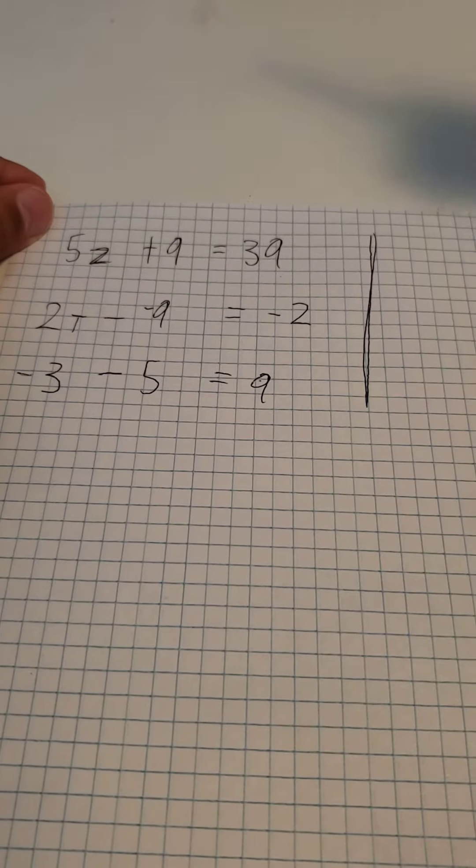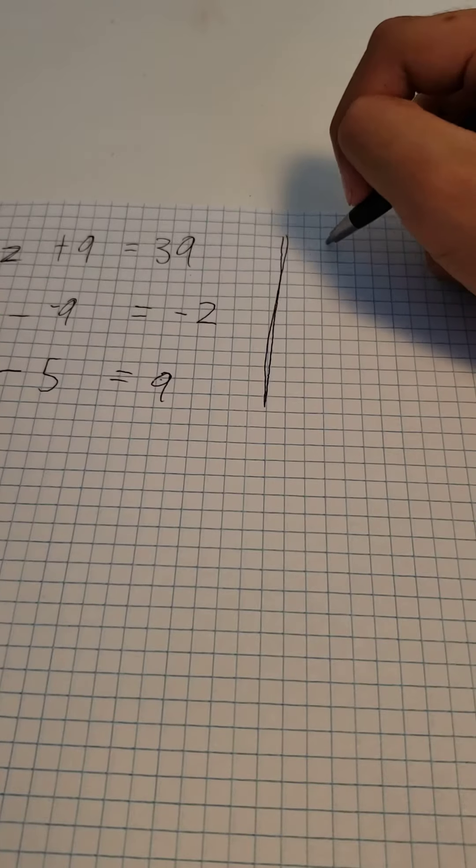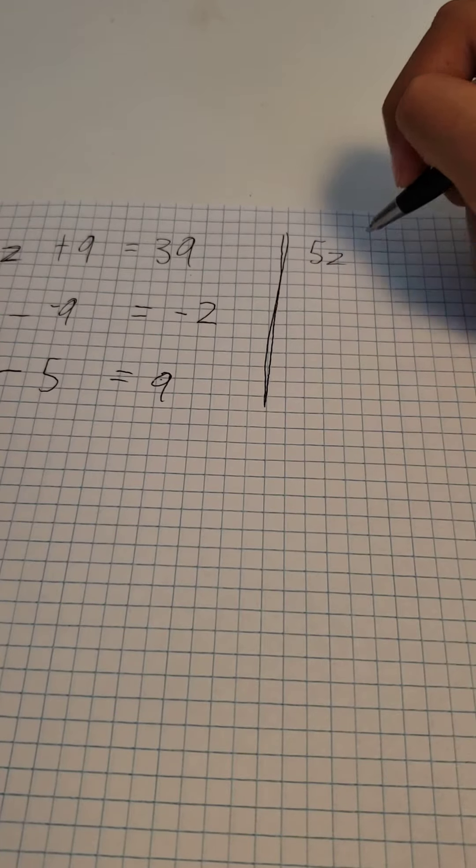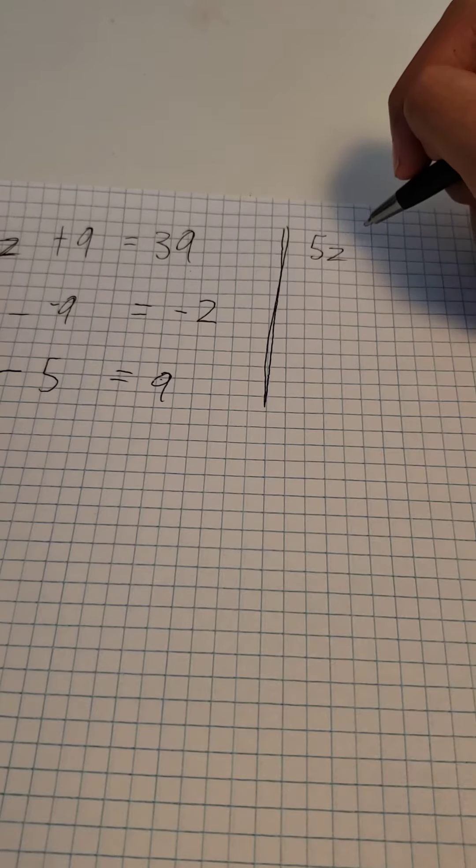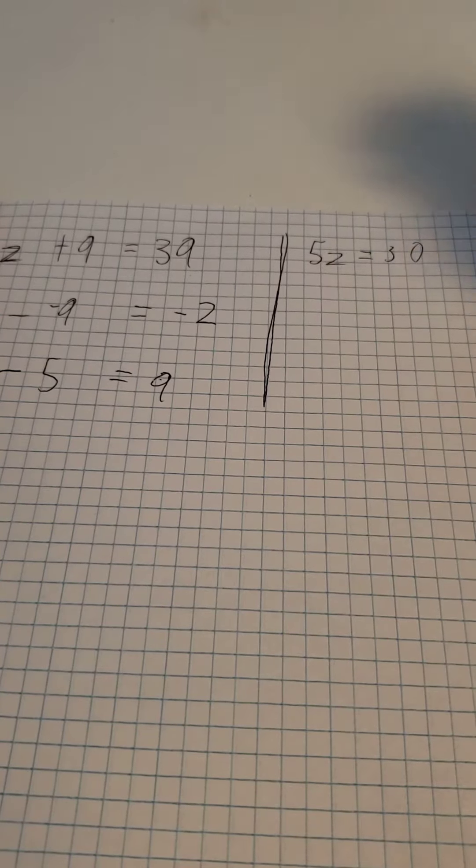Now, this equation 5z plus 9 will be 5z plus 9 minus 9 cancels out, but you also have to subtract 9 on 39, so 5z equals 30.